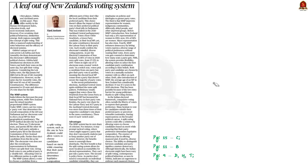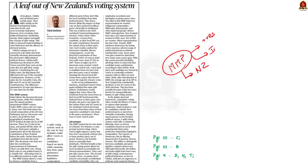Look at this article. This article talks about the mixed member proportional system. This system of election is used in New Zealand. The article talks about the advantages of this system and also the relevance of this system in the Indian scenario. In our discussion today, we will see some of the points mentioned in this article briefly.